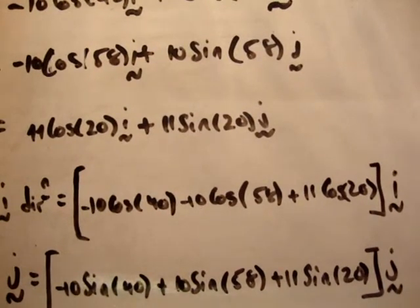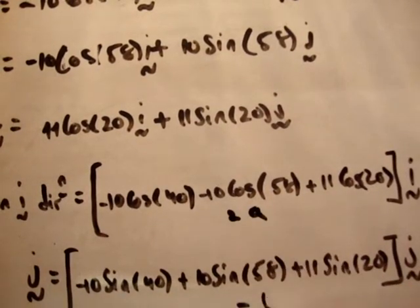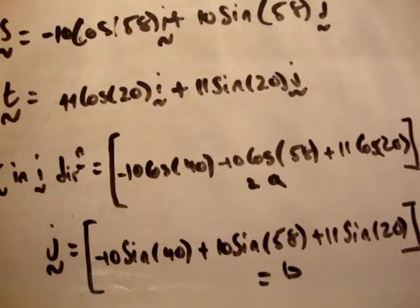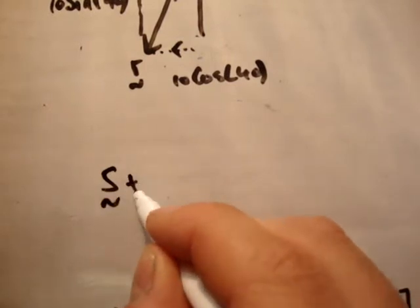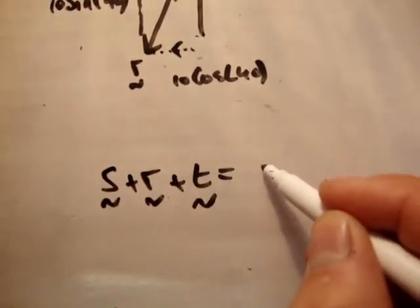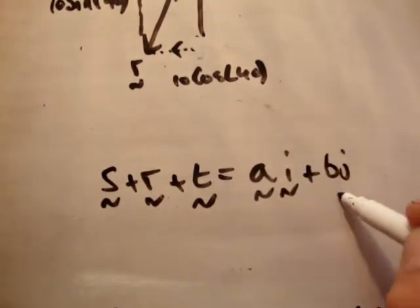That should be quite straightforward for you. It's basically a case of working out literally the magnitude of this, or whatever number that adds to, the magnitude of this. We'll say that number equals a and that number equals b. And then you'd have the following answer. You would have something along the lines of s plus r plus t is equal to a i hat plus b j hat.